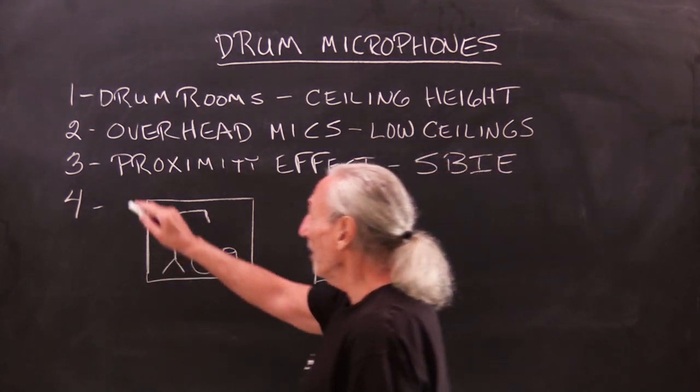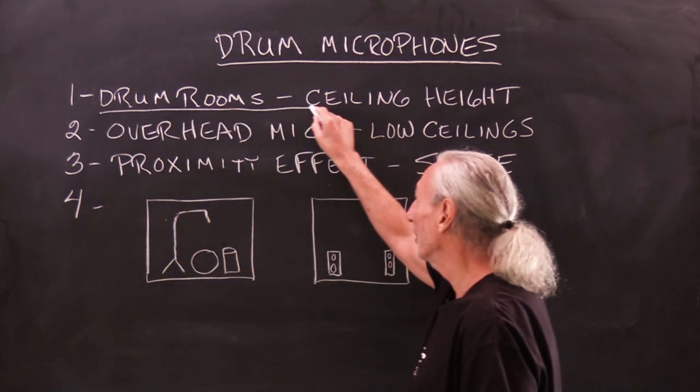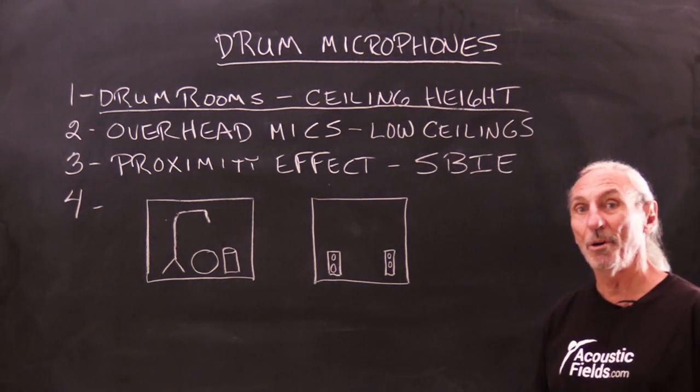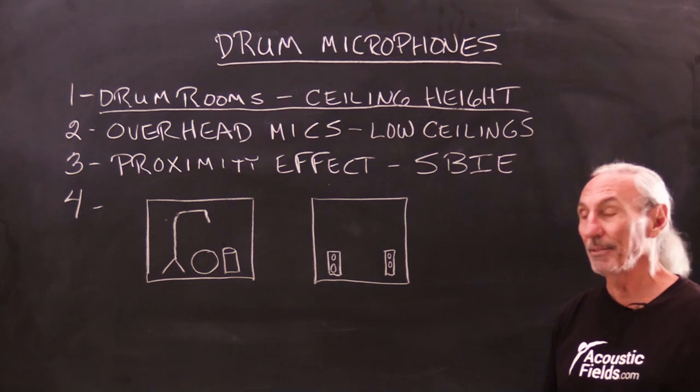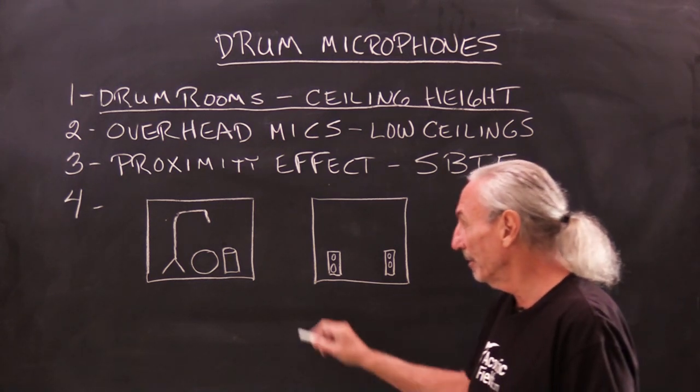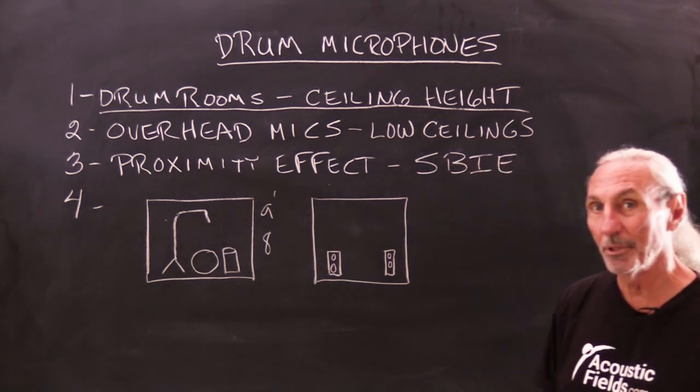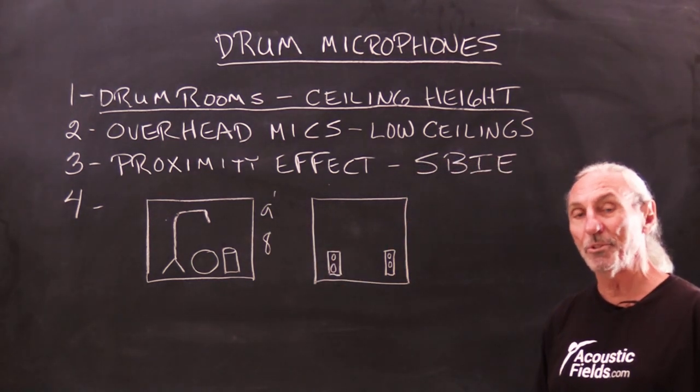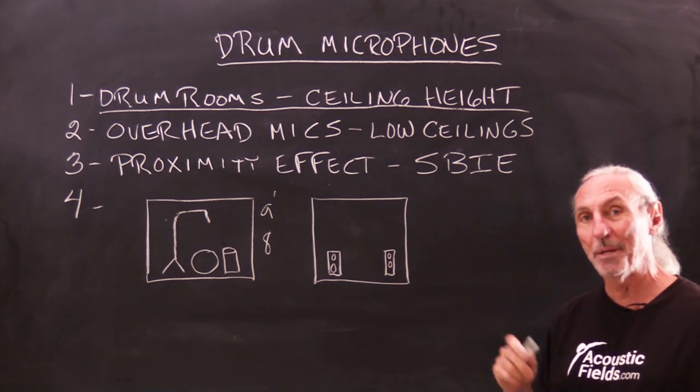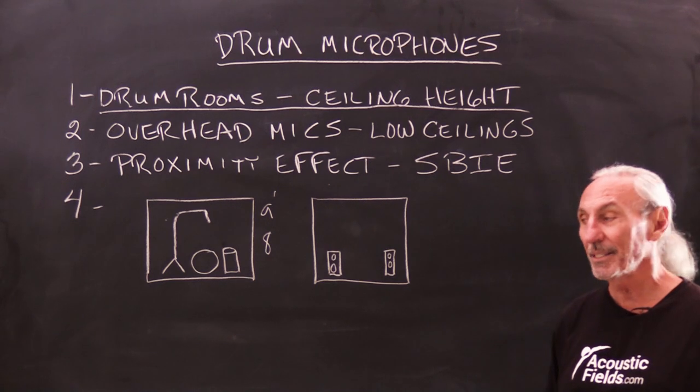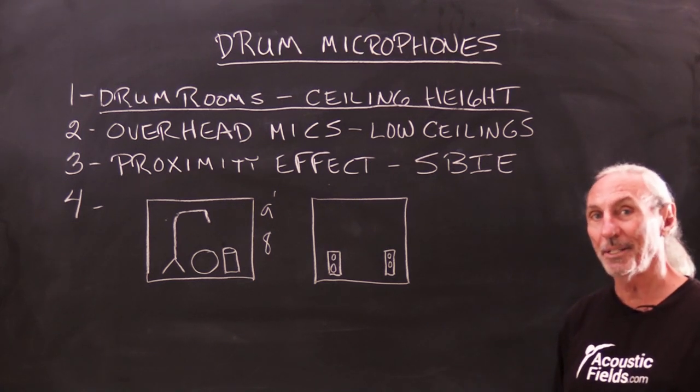We all know from past videos that in drum rooms, one of the critical dimensions we should always consider is ceiling height. I see a lot of rooms that are 8-foot, 9-foot ceiling heights, but if you look at studios from way back when, they had these massive drum rooms with high ceiling heights. There's a reason for the high ceiling height.